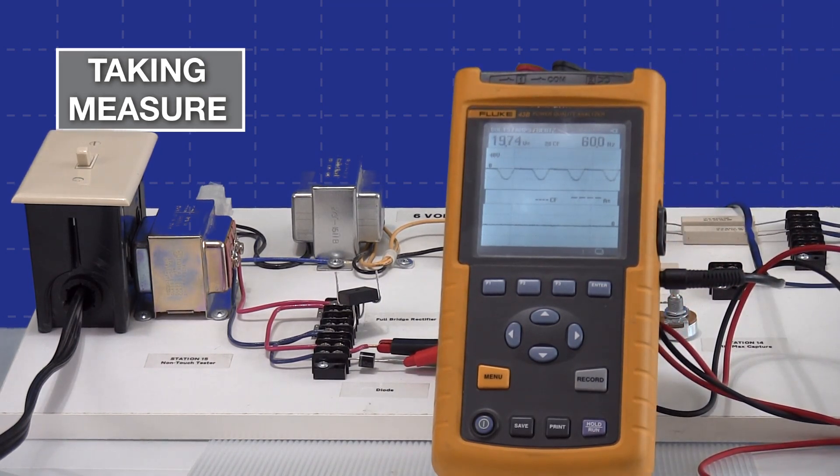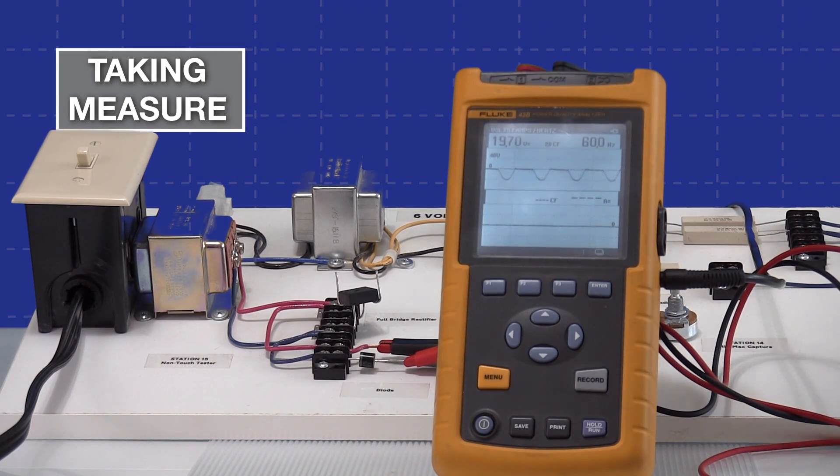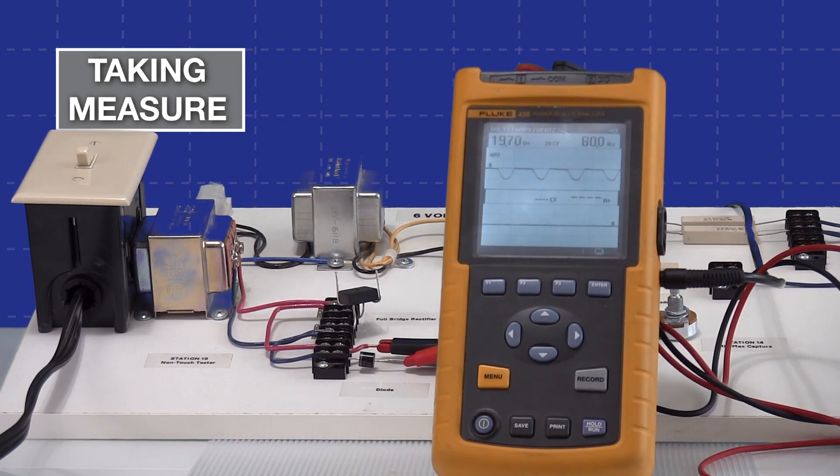And so there you go. Now we have our sine wave is only on the bottom. We have blocked the top half. And you can see we are at 19.71 volts, which is considerably less. And so we have converted this to a DC pulsating signal.